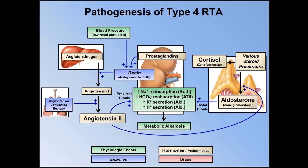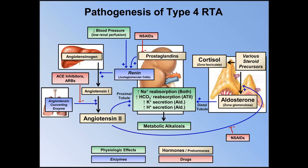There are many medications which interfere with the renin-angiotensin-aldosterone axis. First and most obviously are the ACE inhibitors, which block the action of angiotensin-converting enzyme. Angiotensin receptor blockers, or ARBs, have the same end effect. NSAIDs interfere with two steps: they block synthesis of the prostaglandins which mediate the production and/or release of renin, and they also block the effect of angiotensin-2 on aldosterone production. Heparin, even as little as the doses used for DVT prophylaxis, can interfere with the production of aldosterone by its direct toxic effects on the cells of the zona glomerulosa. Cyclosporine and Bactrim both interfere with aldosterone's effect on the distal tubule, as does aldosterone receptor antagonists such as spironolactone.